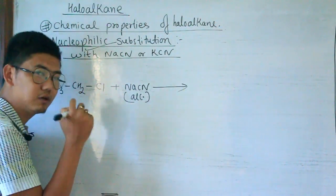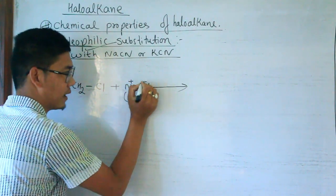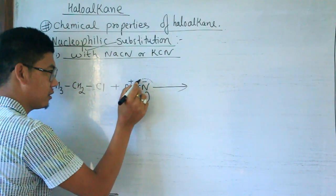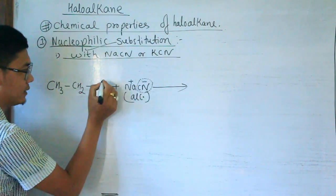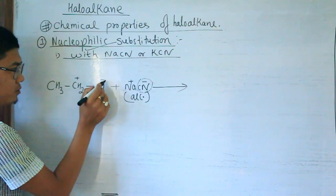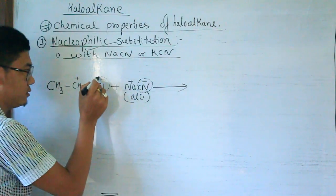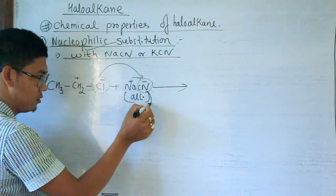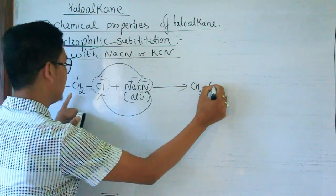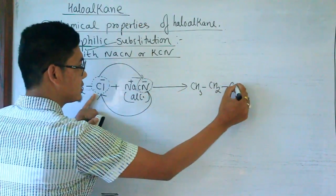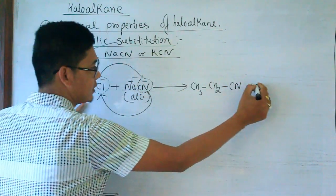In this nucleophilic substitution, the negatively charged species CN⁻ attacks. Cl⁻ leaves as the leaving group, and CN⁻ acts as the nucleophile. We take Cl⁻ out and exchange it for CN. Then we get CH₃CH₂CN — the CN group is now attached to the carbon chain.